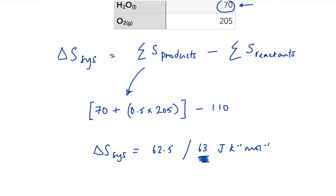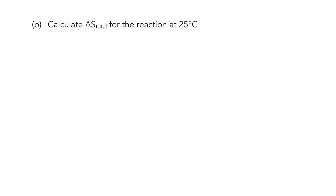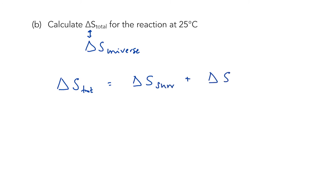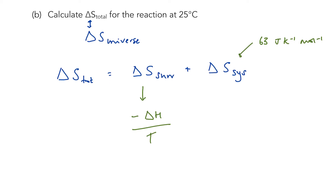In part (b) we're asked to calculate the total entropy change for this reaction at 25°C. Sometimes total entropy change is given as the entropy change of the universe. The total entropy change equals the entropy change of the surroundings plus the entropy change of the system. The entropy change of the system we've just worked out: 63 joules per kelvin per mole.